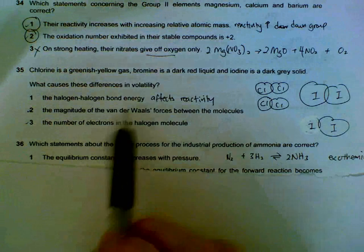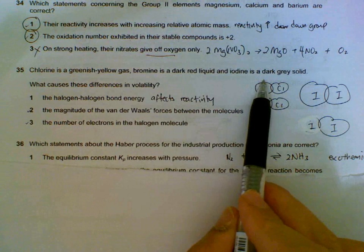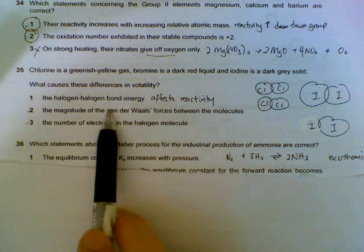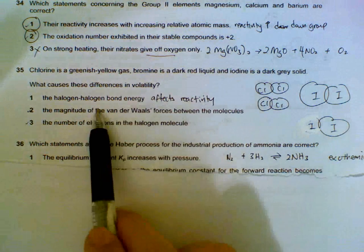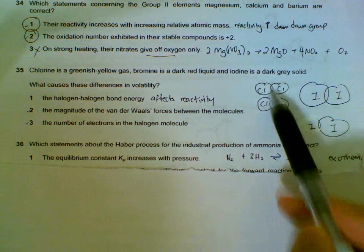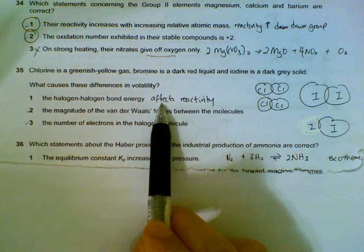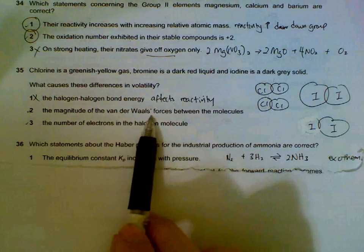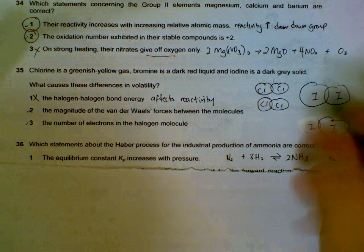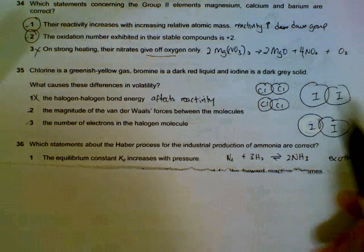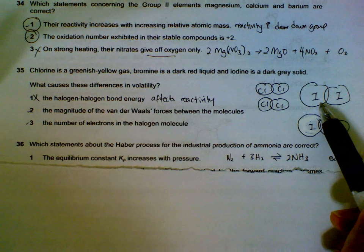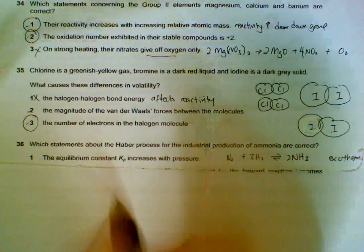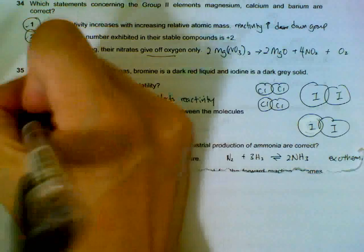Question 35: Chlorine is a gas, bromine is a liquid, iodine is solid under room conditions. What causes these differences in their volatility? The bond energy is to break up the molecule into atoms—this one affects reactivity, so it doesn't affect the intermolecular attraction. Van der Waals forces: iodine has a stronger van der Waals force than chlorine and bromine because it has the most number of electrons. So number of electrons affects the volatility and that affects the van der Waals forces.